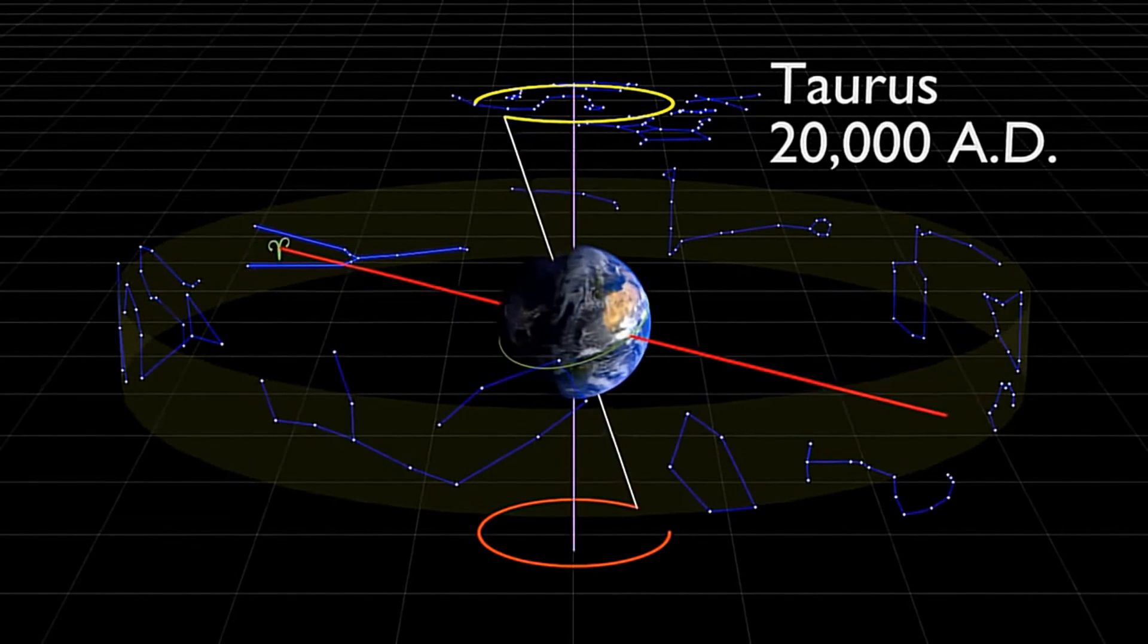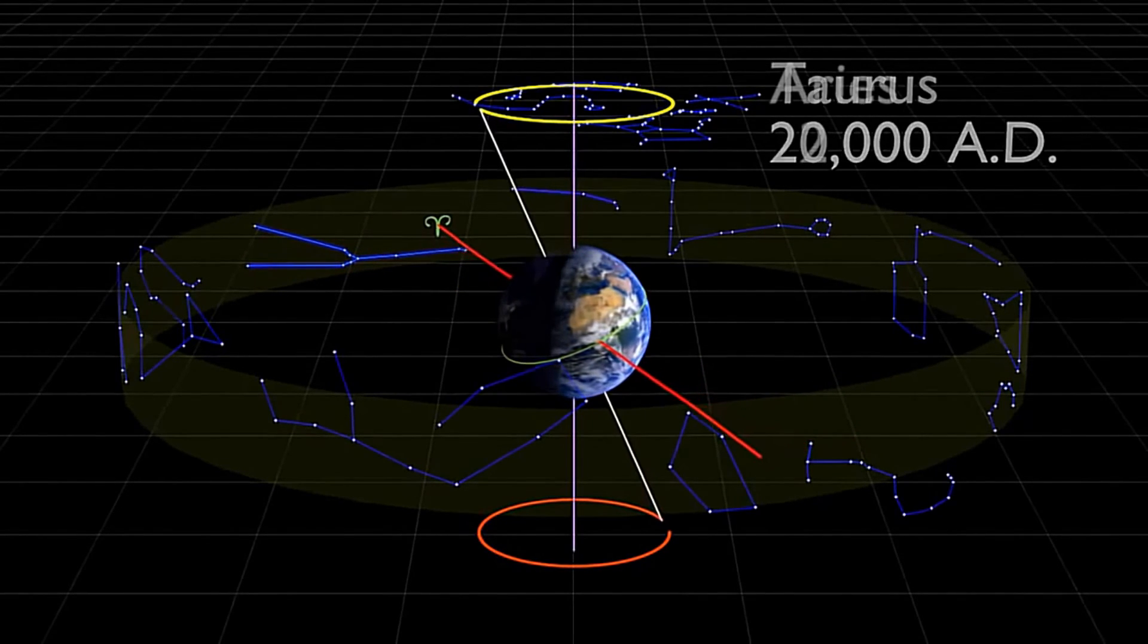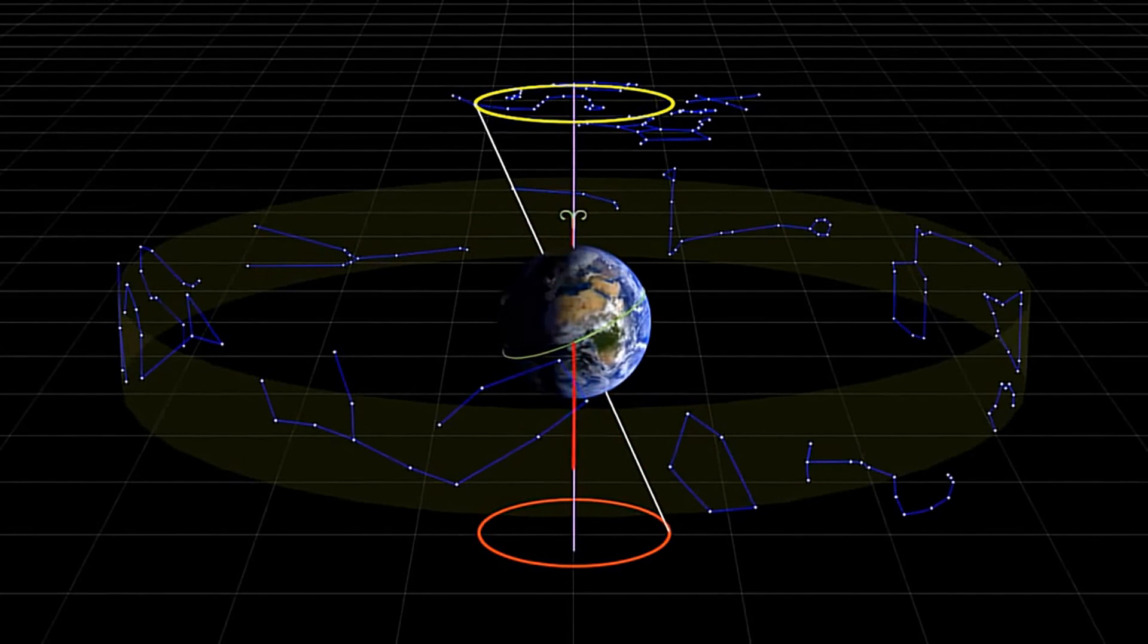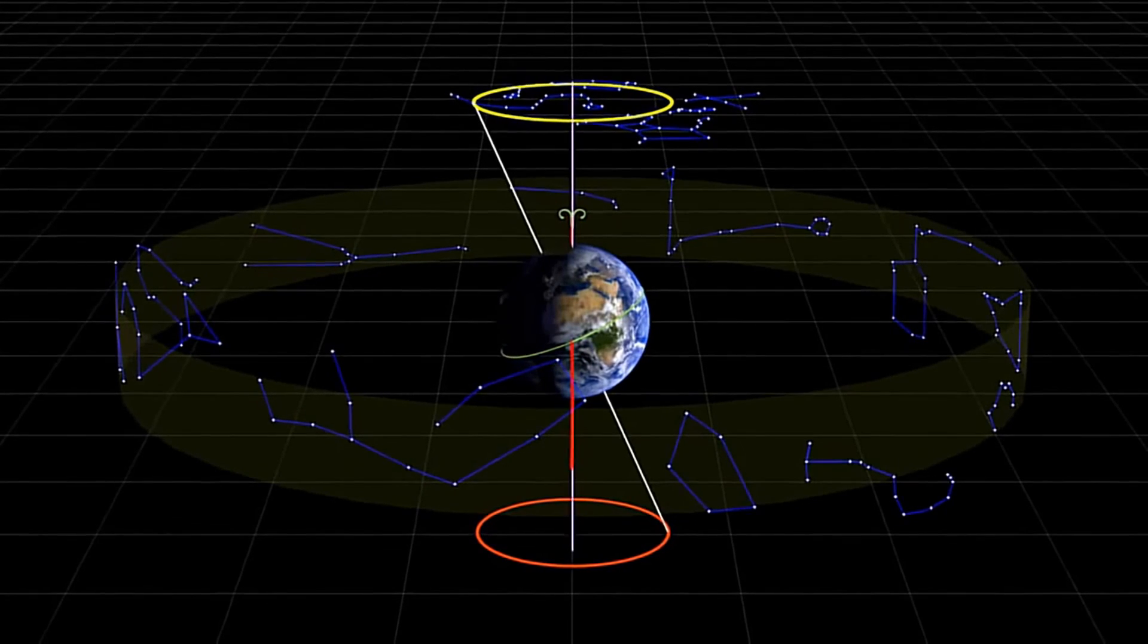The net effect is that Polaris will not always be our pole star, and in a few thousand years, the North Celestial Pole will slowly migrate towards Gamma Cephii, and then on towards Vega.